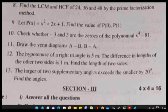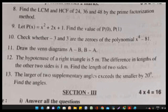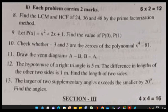Moving on to Section 2, which has six questions, each carrying two marks — total 12 marks for this section. Question 8: Find the LCM and HCF of 24, 36, and 48 by the prime factorization method.